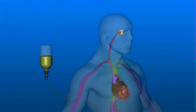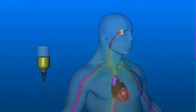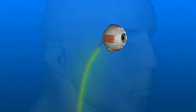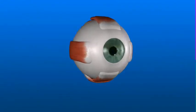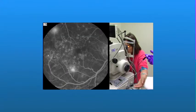With fluorescein angiography, a small amount of yellow dye is injected into your arm where it circulates through all the blood vessels in the body, including those in the retina. A special camera is used to take a series of pictures of the retina. Any abnormal blood vessels will be evident in these images.